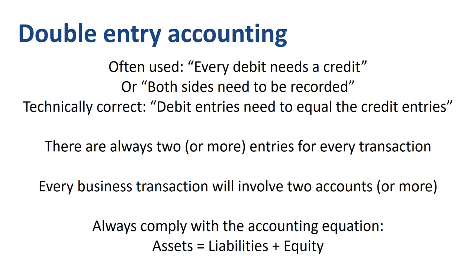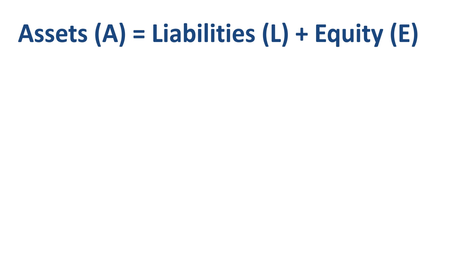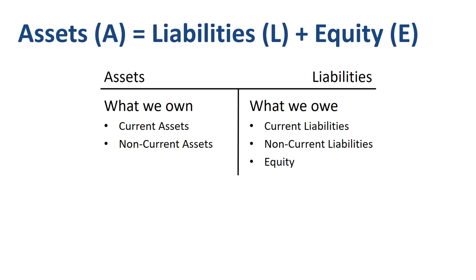Let's dive into that last description of double entry accounting a little bit deeper. Why do assets need to equal liabilities and equity? At the end of the accounting period you will be making a balance sheet — an overview of what you own and what you owe. As the name balance sheet suggests, the sum of the amounts on the left has to equal the sum of the amounts on the right.